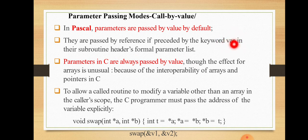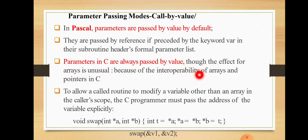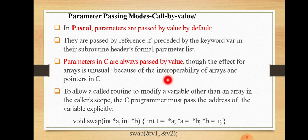Parameters in C are always passed by value, though the effect for arrays is unusual because of the interoperability of arrays and pointers in C. The default parameter passing method in C is pass by value, but in the case of arrays and pointers, pass by reference also comes into play. To allow a called subroutine to modify a variable other than an array in the caller's scope, the C programmer must pass the address of the variable explicitly.